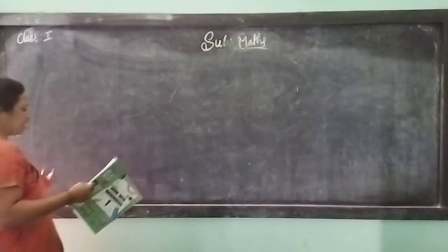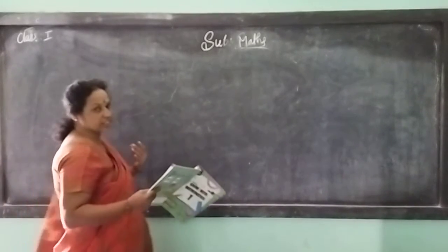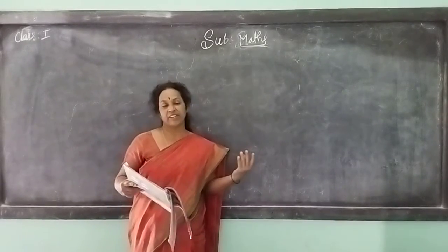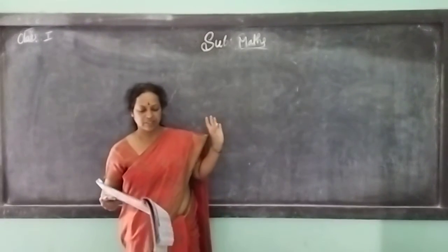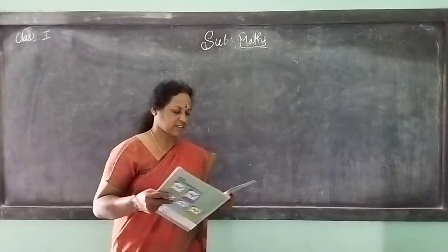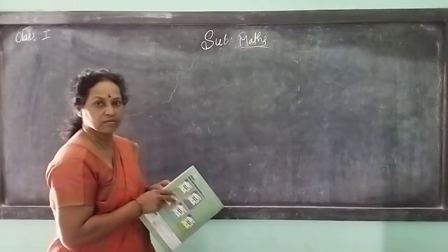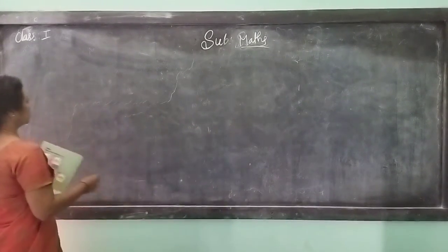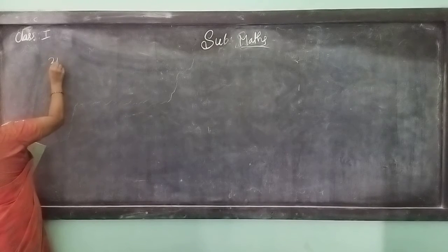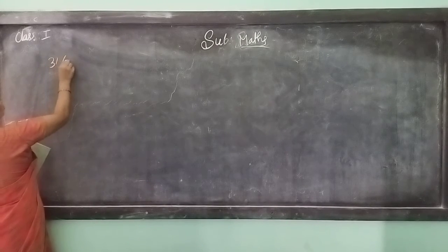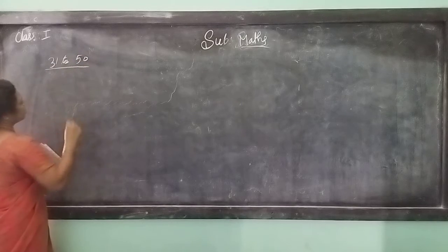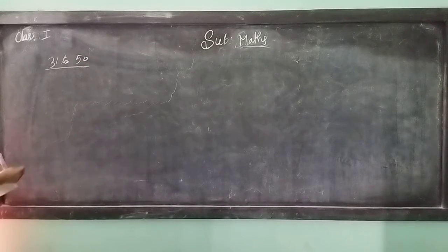Good morning children. Last class we wrote the numbers in words from 1 to 30. Now I continue from 30 to 50 today in this class. So 1 to 30 we have written. Now I continue from 31.